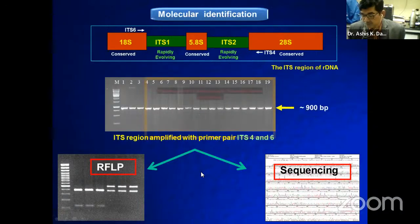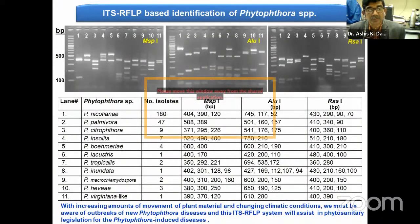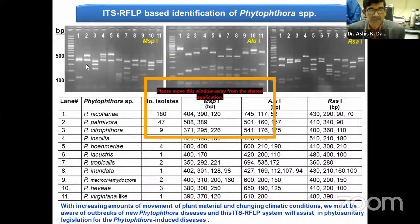In this way we generally identify a particular Phytophthora species. Here you can see this ITS-RFLP profile — the different fingerprints for particular species.